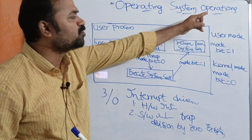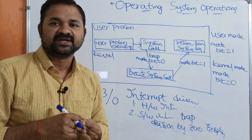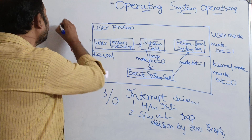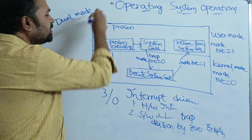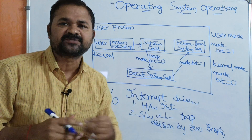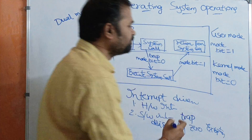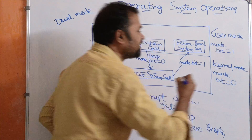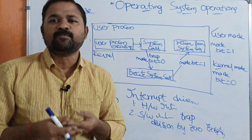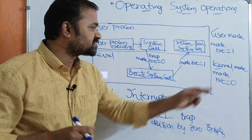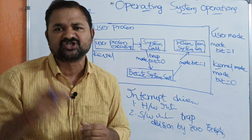In this concept, we are going to discuss operating system operations — specifically dual mode operations. Dual mode means we perform two types of operations. We have two modes: first is user mode, and second is kernel mode. In order to maintain the mode, hardware provides a mode bit. The value of the mode bit may be either one or zero.